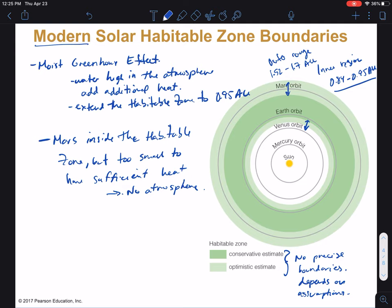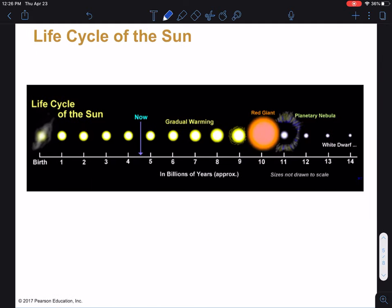Now, the habitable zone isn't constant. Like it says here, this is the modern habitable zone. But the sun hasn't always had the same brightness. So, let's take a look at that.